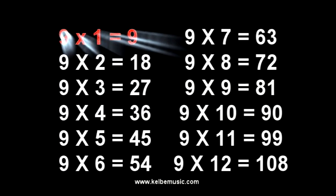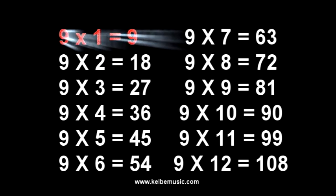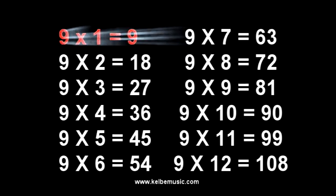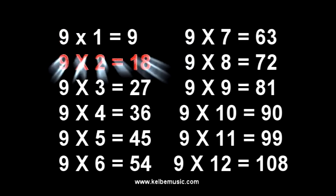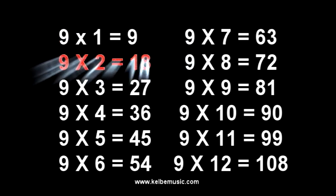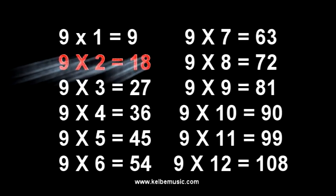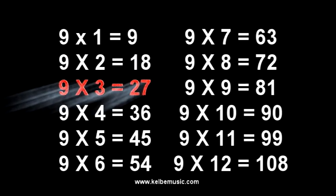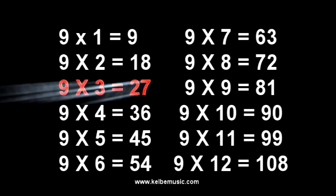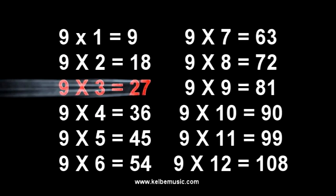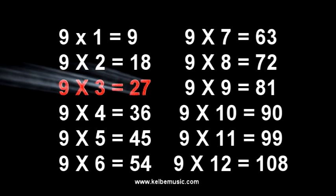9 times 1 is 9, 9. 9 times 2 is 18, 18. 9 times 3 is 27, 27.